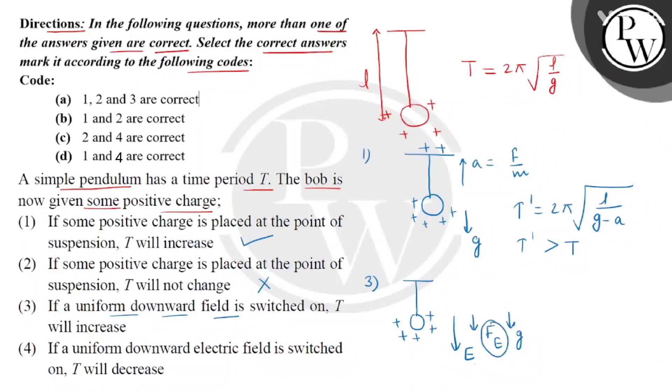So kids, here will be an acceleration due to F_e. What will be the net acceleration due to this? This acceleration's direction will also be downward. So we can say that T double dash will be 2π square root of L divided by G plus A dash. So T double dash will decrease in comparison to T. Therefore, statement 3 is incorrect.